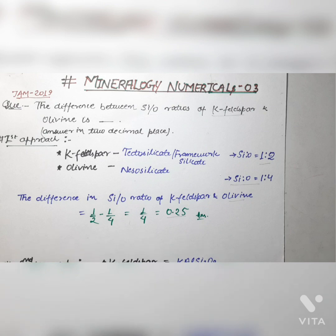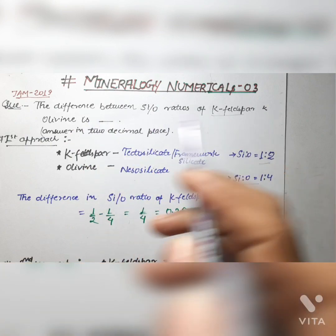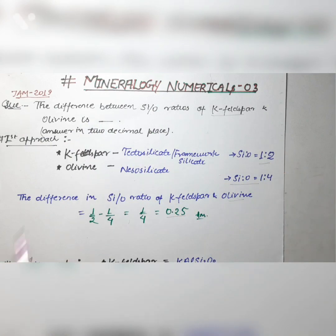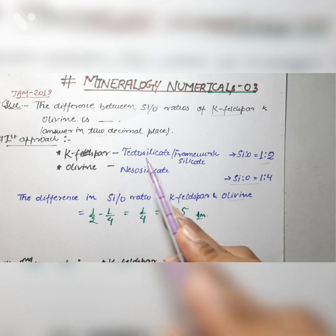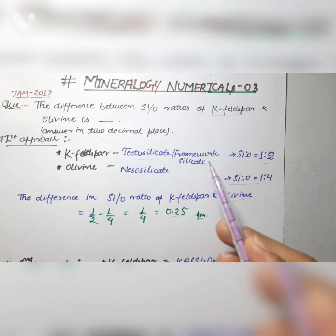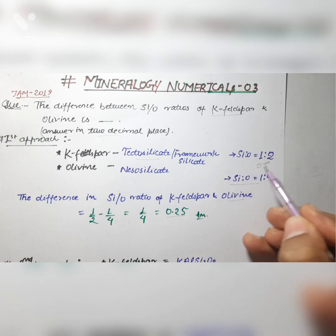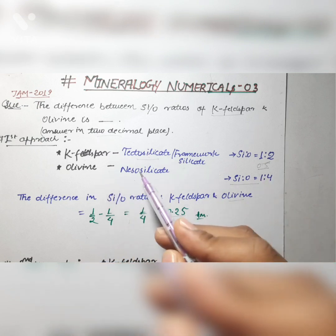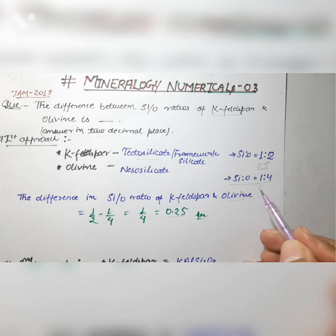The first question is taken from JAM 2019 and it says: the difference between the Si:O ratio of Kefelspar and olivine is. The first approach to solving this question is when you do not know the chemical composition of Kefelspar and olivine. Kefelspar belongs to tectosilicate or framework silicate where the Si:O ratio is 1:2, that is 0.5, and olivine belongs to neosilicate in which the Si:O ratio is 1:4, that is 0.25.